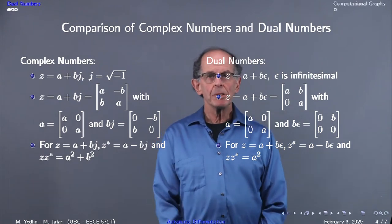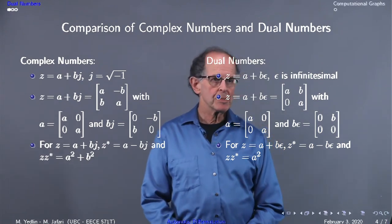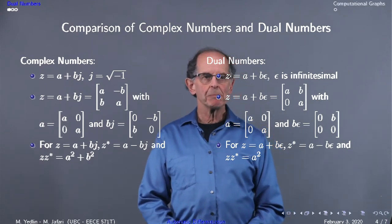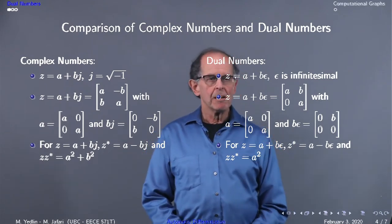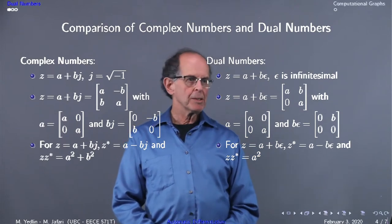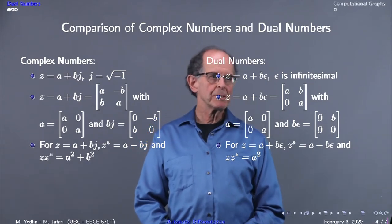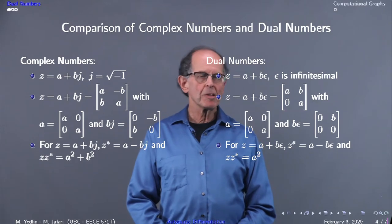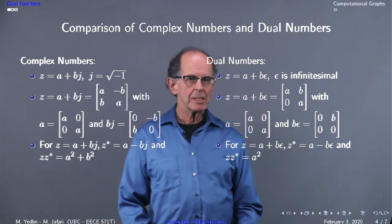For complex numbers, we know the conjugate, and z times z-star is the magnitude squared. For dual numbers, z is a plus b epsilon, the conjugate is a minus b epsilon, and due to the properties of dual numbers, z times z-star equals a squared.